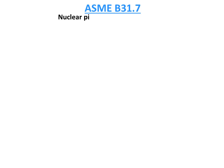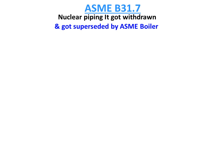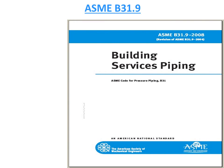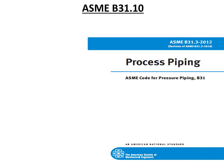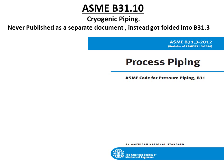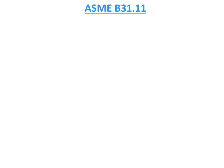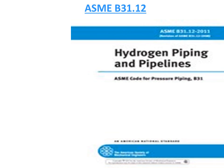B31.7 was meant for nuclear piping and that work was withdrawn. ASAB31.8 is for gas transmission and distribution piping systems. ASAB31.9 is for building services piping. ASAB31.10 was meant for cryogenic piping but was never published as a separate document and instead got pulled into B31.3 itself. ASAB31.11 is for slurry transportation piping. ASAB31.12 is for hydrogen piping and pipelines.